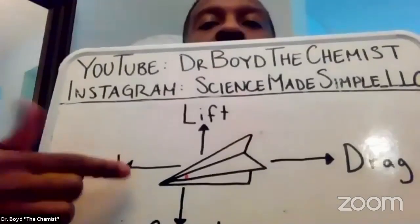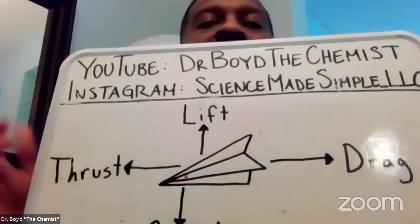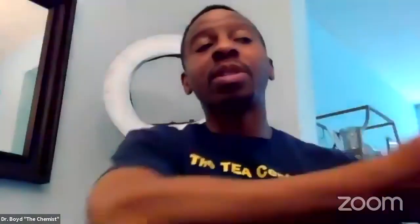You might notice this little red dot here. That red dot represents the center of mass of the plane. The further forward that point is on the airplane, the easier it is for the plane to travel forward. If I put the center of mass towards the back, that's going to hold the plane back, so it won't travel as far forward as if the center of mass were closer to the front.